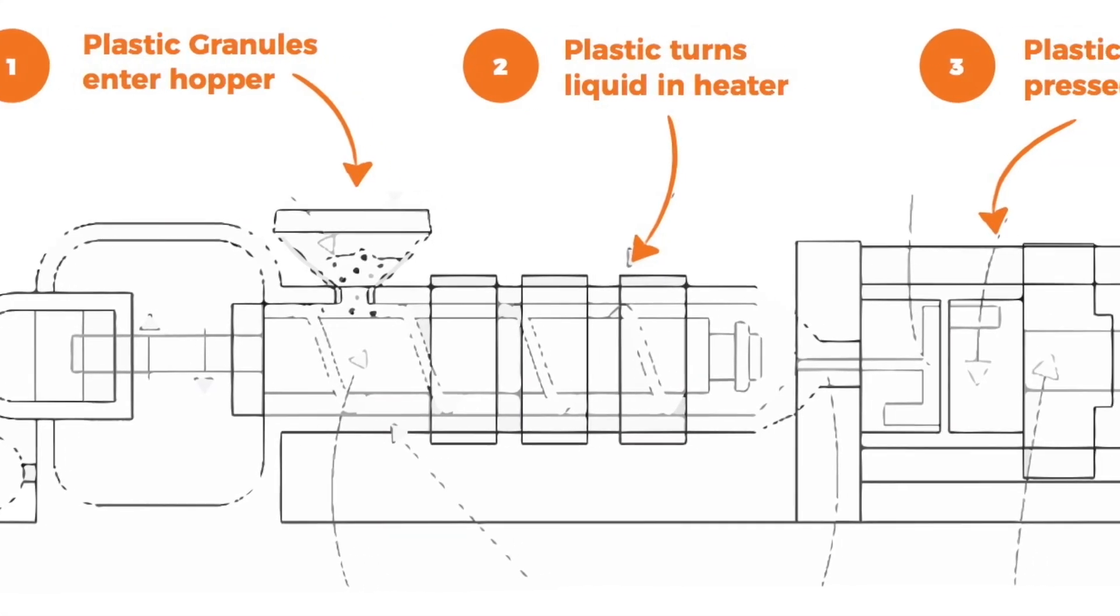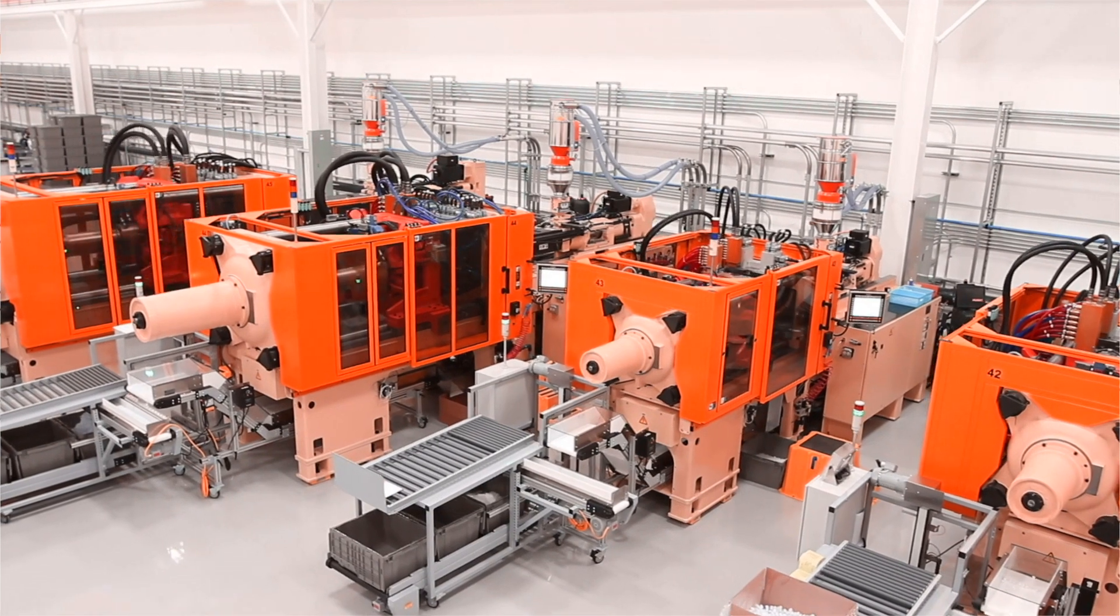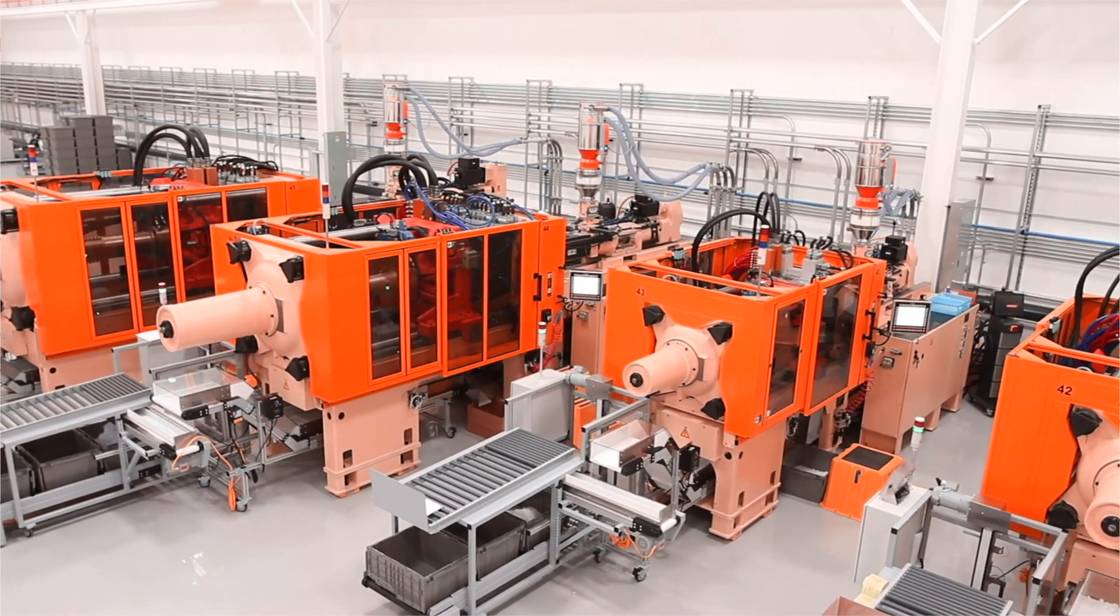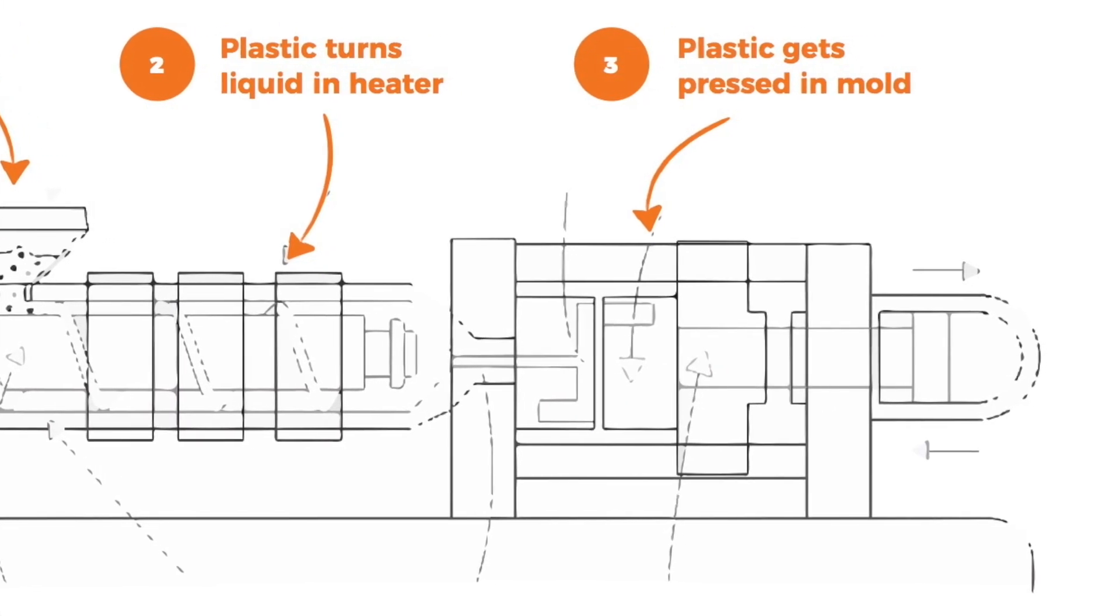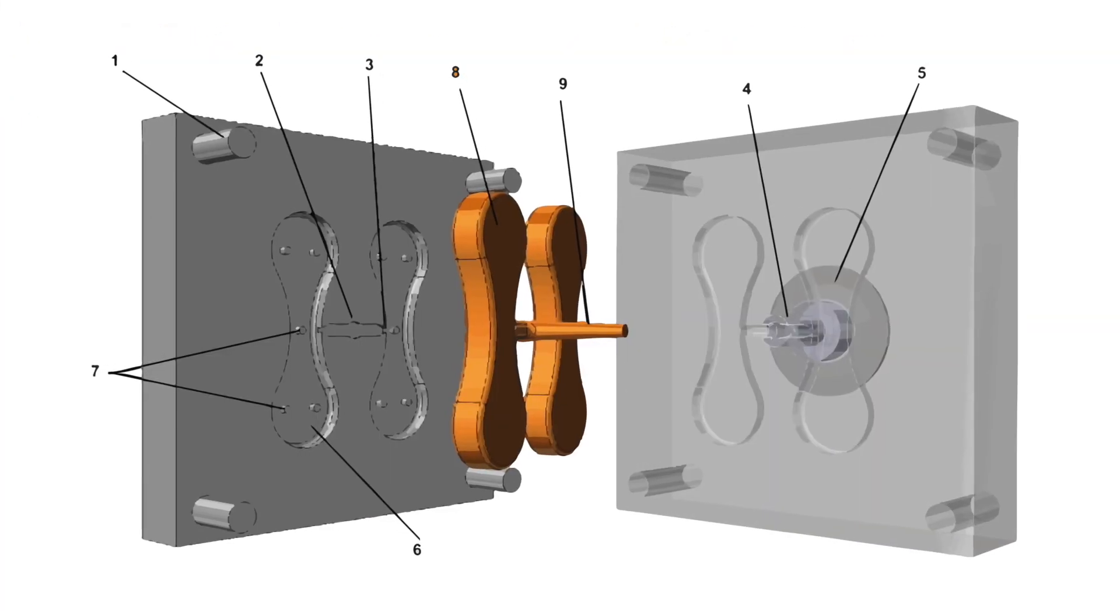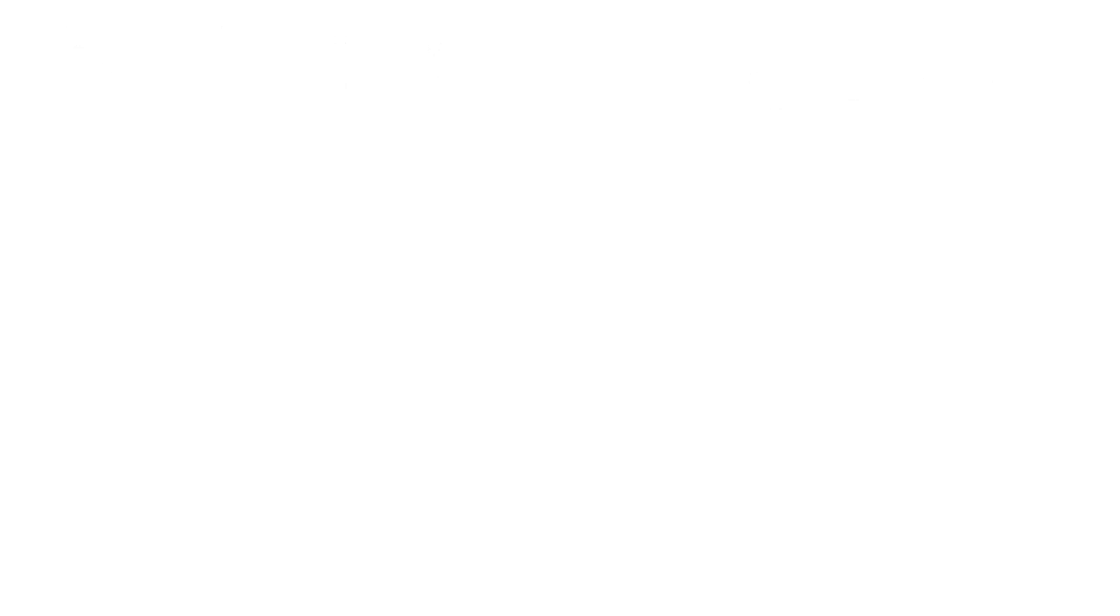Then, the machine injects the liquid plastic into a mould so the product gets its desired shape. After the mould is filled completely, the plastic cools down and solidifies. The mould opens to reveal the finished product.